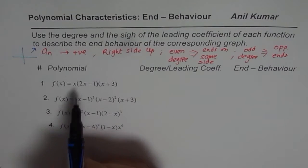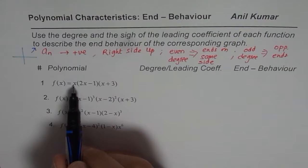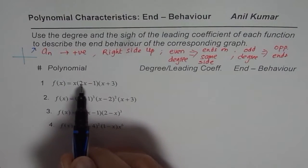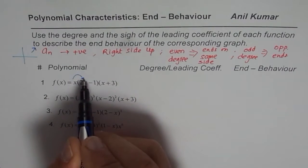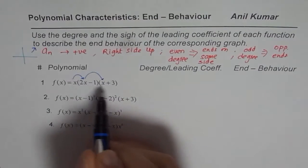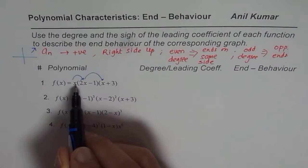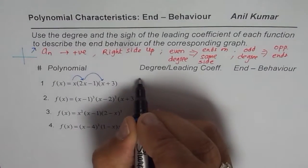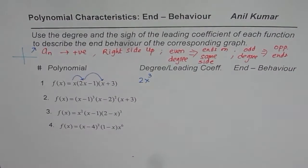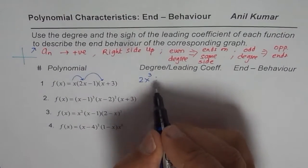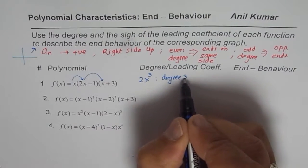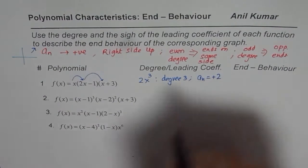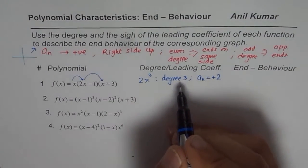Let's begin with the first polynomial: f(x) = x · (2x − 1) · (x + 3). If you multiply the x terms — x times 2x times x — you get 2x cubed. So we get the term 2x³, which gives us two pieces of information: degree is 3, and leading coefficient a_n is +2.